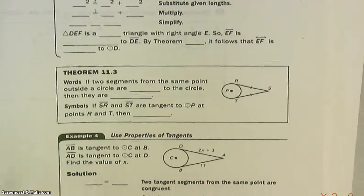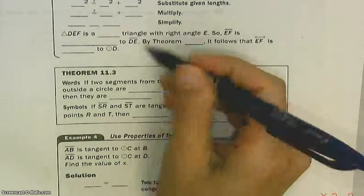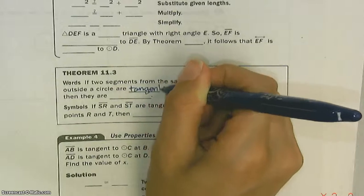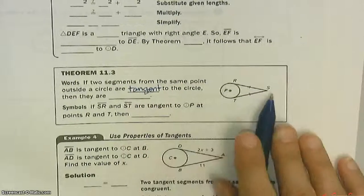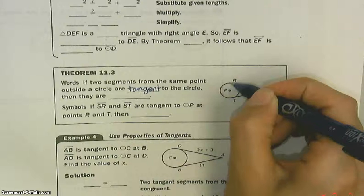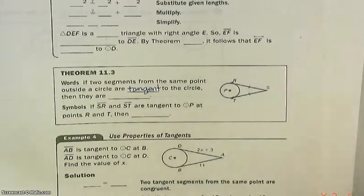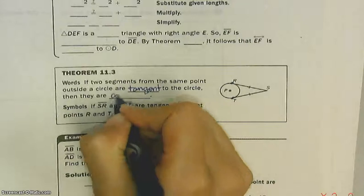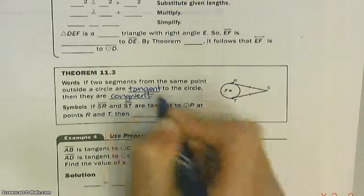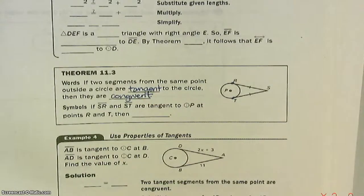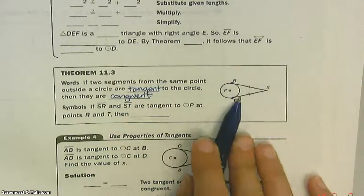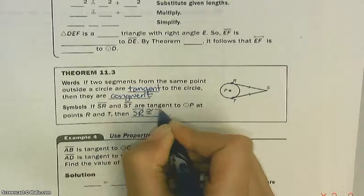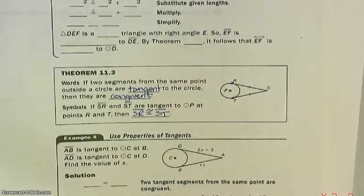Theorem 11.3: If two segments from the same point outside a circle are tangent to the circle, so we've got two segments that are tangent. See how they both touch once? They touch here and here. If they're both tangent, then they're going to be congruent. If SR and ST are tangent, then SR is congruent to ST. They're going to be the same length.